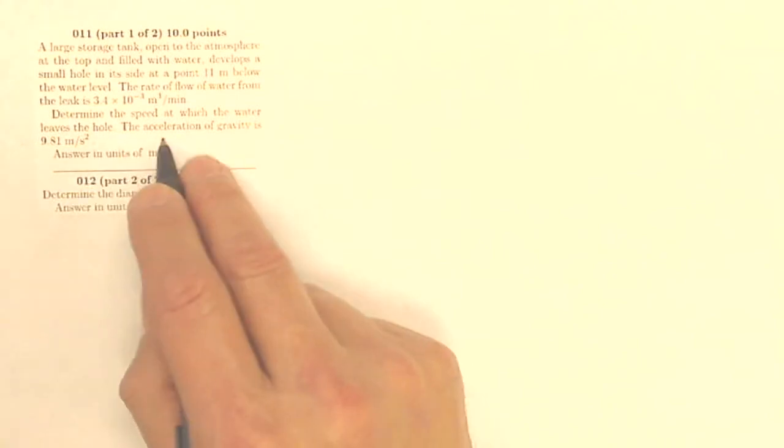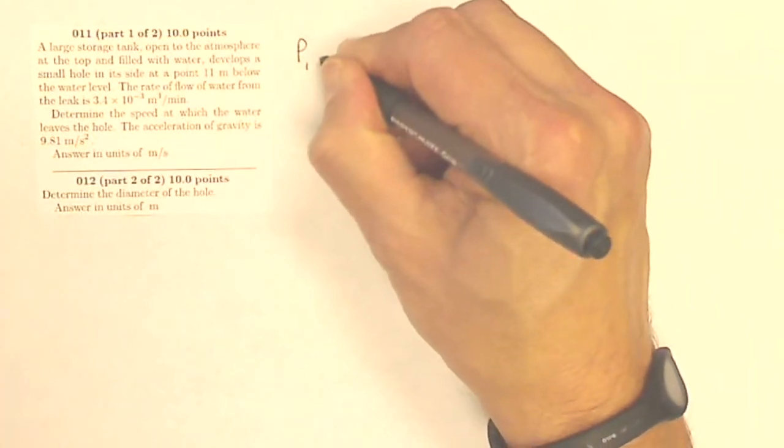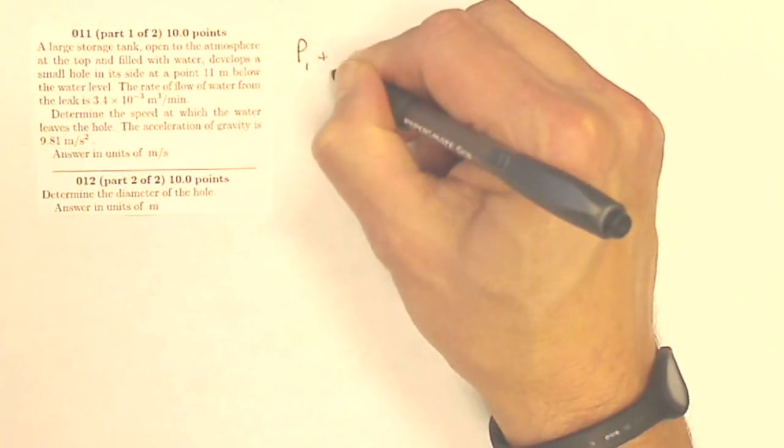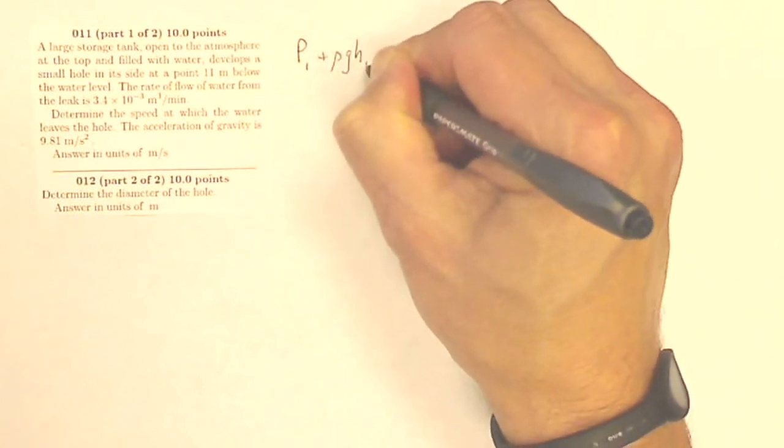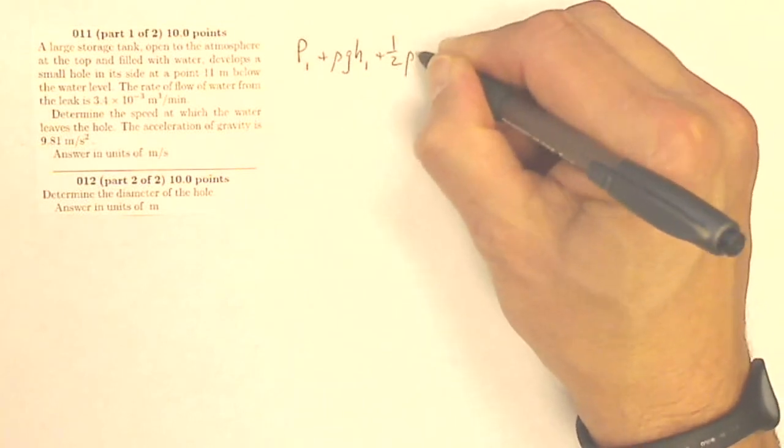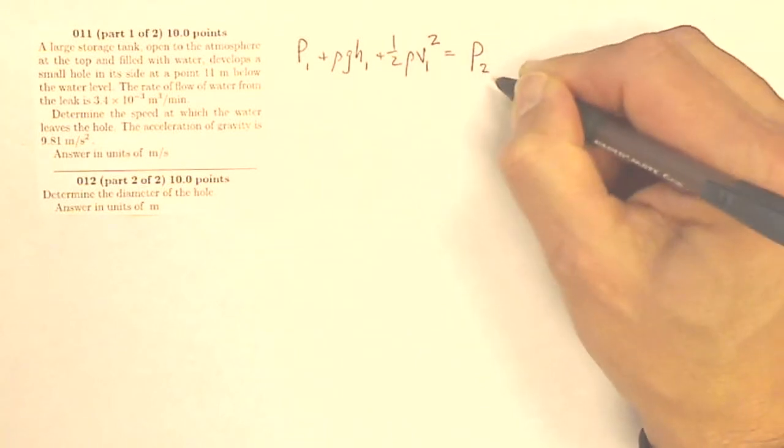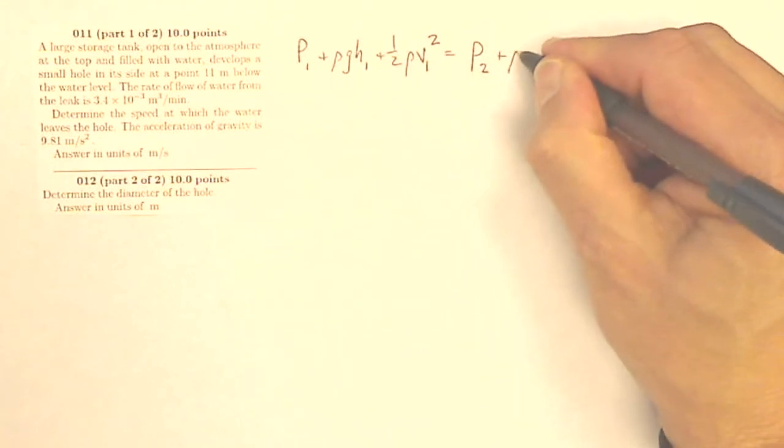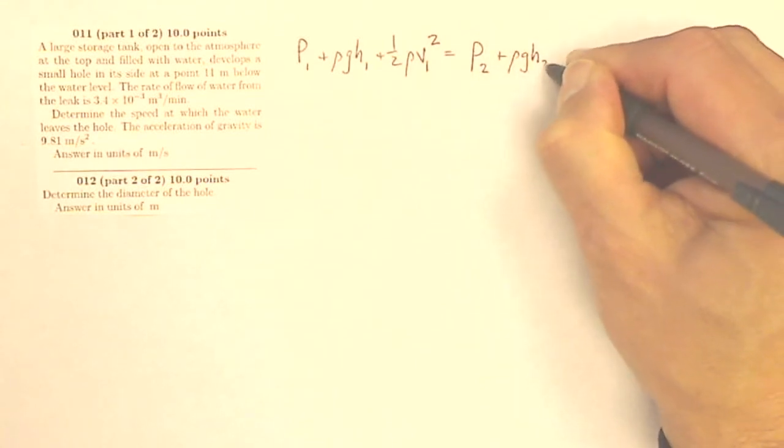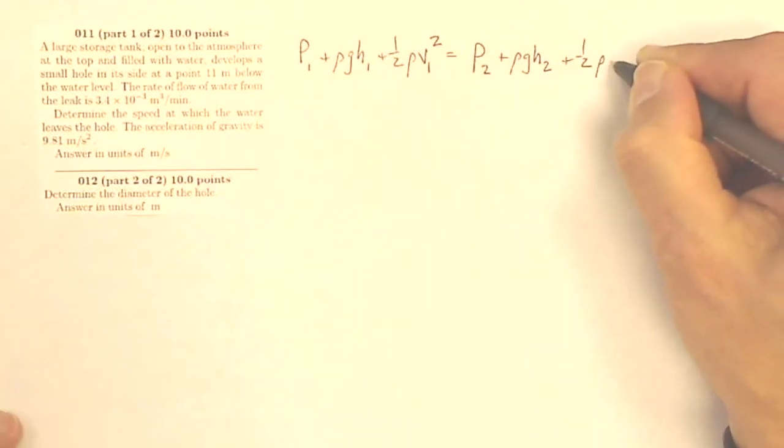So first I want the speed at which the water leaves the hole. This starts off as Bernoulli's equation where the pressure at the top plus rho g the height at the top plus one-half rho v at the top squared equals the pressure at the bottom or at the hole plus rho g the height of the hole plus one-half the density times the velocity at the hole squared.